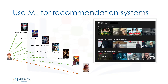In this course, you'll see how machine learning helps websites such as YouTube, Amazon, or Netflix develop recommendations to their customers about various products or services, such as which movies they might be interested in going to see or which books to buy.